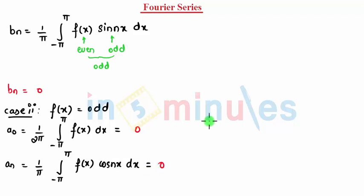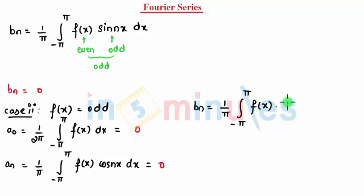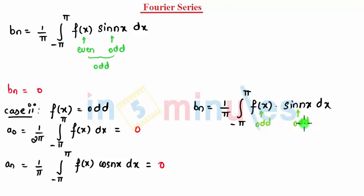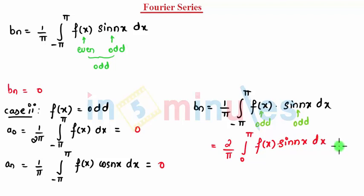But in the case of bn, bn is 1 upon pi times the integral from minus pi to pi of f(x) sin(nx) dx. Since f(x) is odd and sin(nx) is also odd, odd times odd gives even. So I can write bn as 2 by pi times the integral from 0 to pi of f(x) sin(nx) dx.